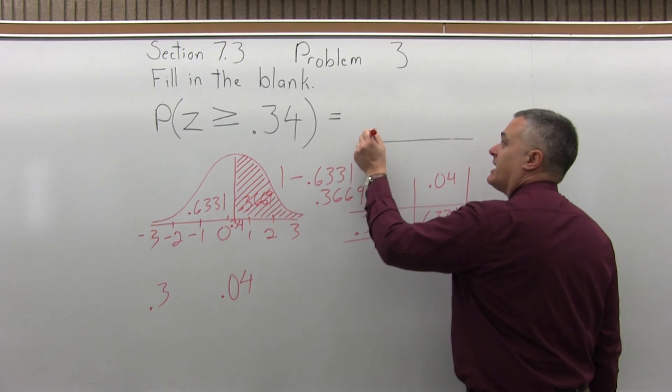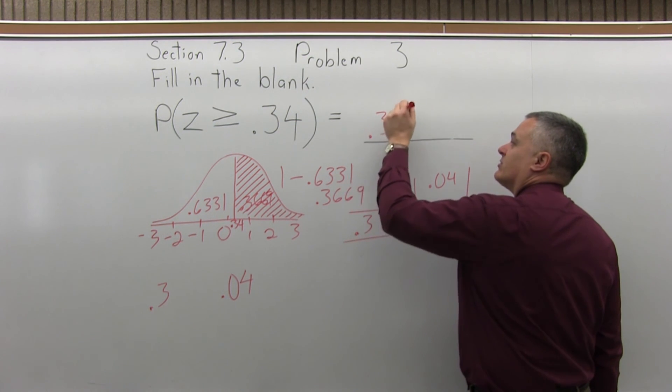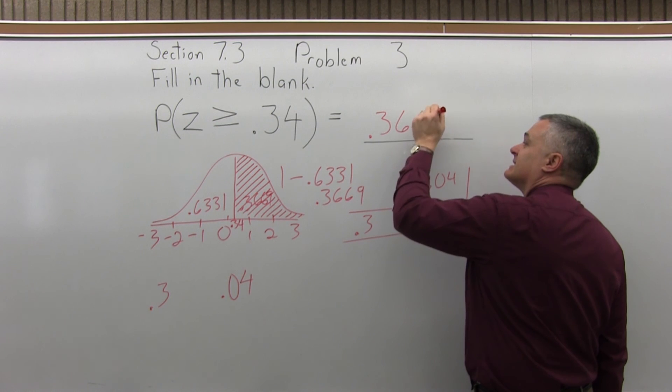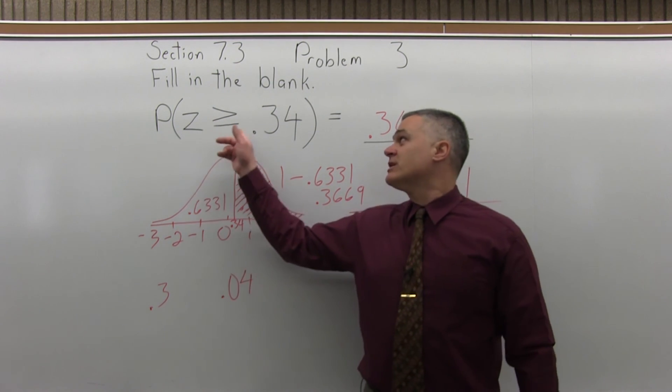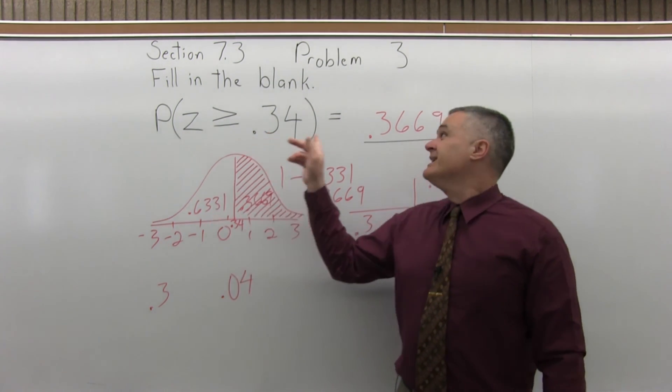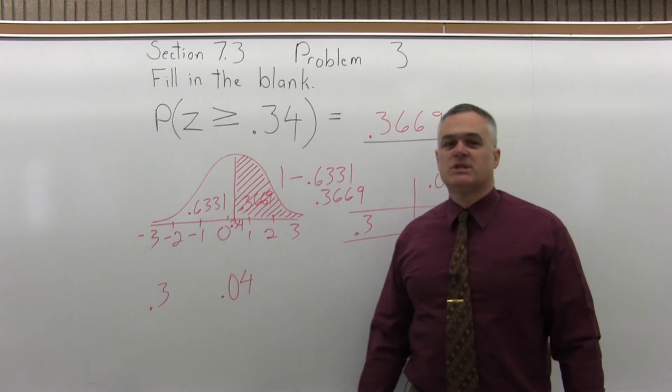So that's what we fill in the blank with, .3669. So the probability that Z is greater than or equal to .34 is almost a 37% probability.